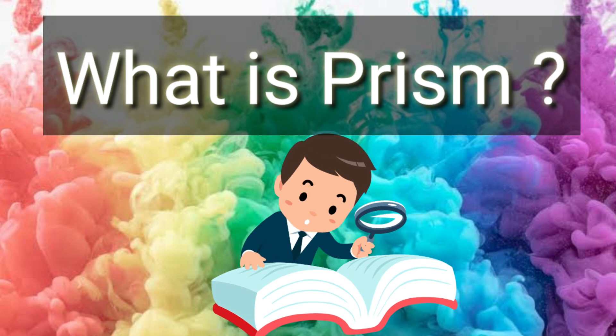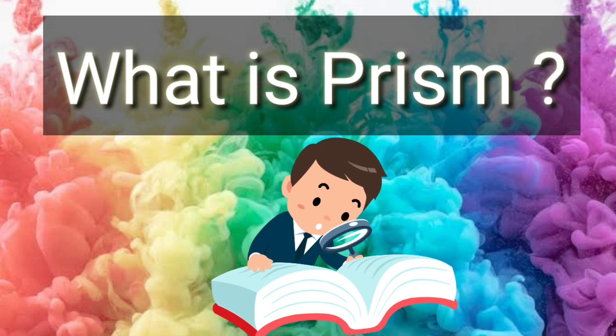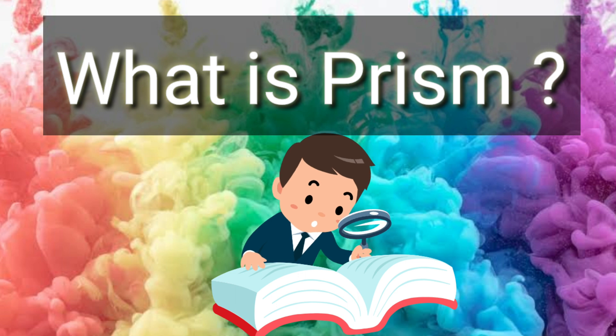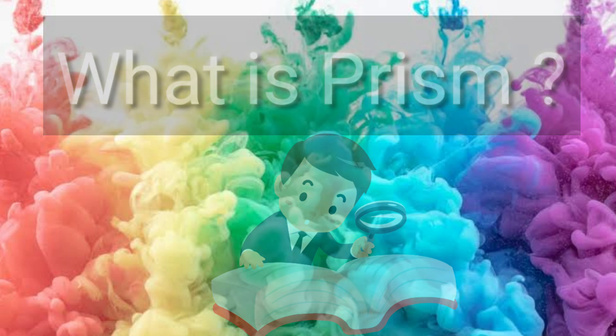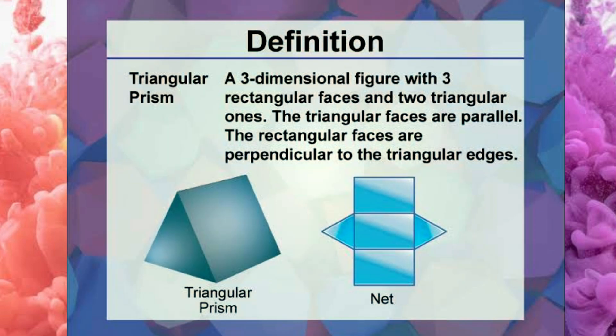Here the word used is glass prism. Let us now first understand what actually a glass prism is. When we say glass prism, we generally mean triangular prism. A triangular prism is a three-dimensional figure with three rectangular faces and two triangular faces. The triangular faces are parallel.